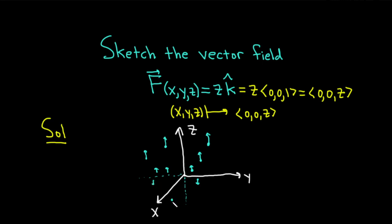If we're down here, the vector is larger in magnitude, but again going down. That's the idea for a sketch of this vector field.